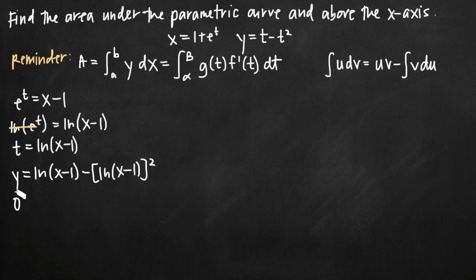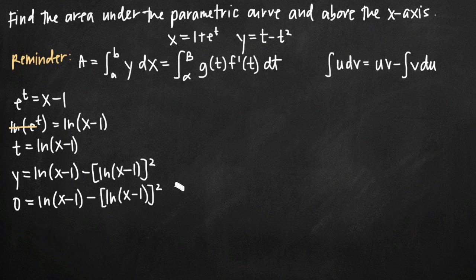The equation for the x-axis is y equals zero, so we plug zero in for y. Solving for x will tell us where this curve crosses the x-axis, giving us our points of intersection, which will be our limits of integration a and b. We set y equal to zero and solve for x to get those limits.